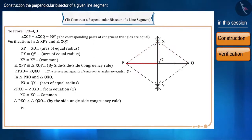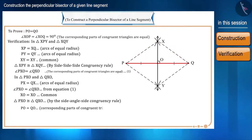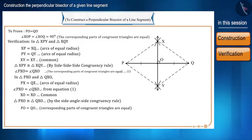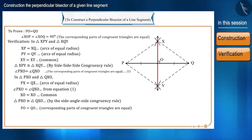Therefore, side PO equals side QO, since the corresponding parts of congruent triangles are equal. That is, point O bisects the line segment PQ. We have proved the part that PQ is bisected by XY. Now it remains to be proved that line XY is perpendicular to line segment PQ.